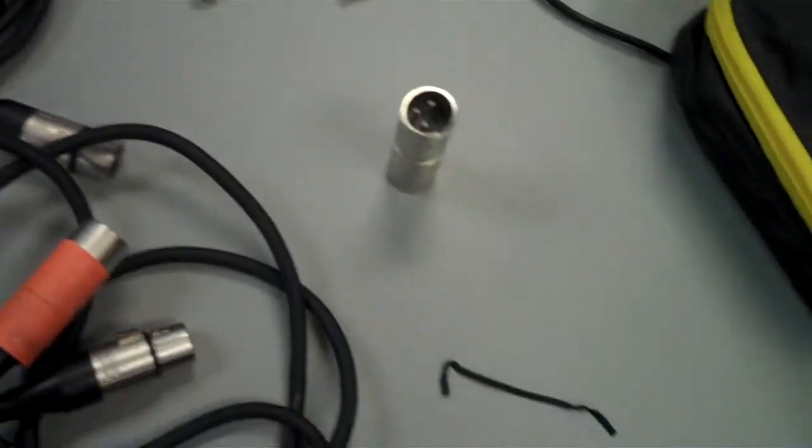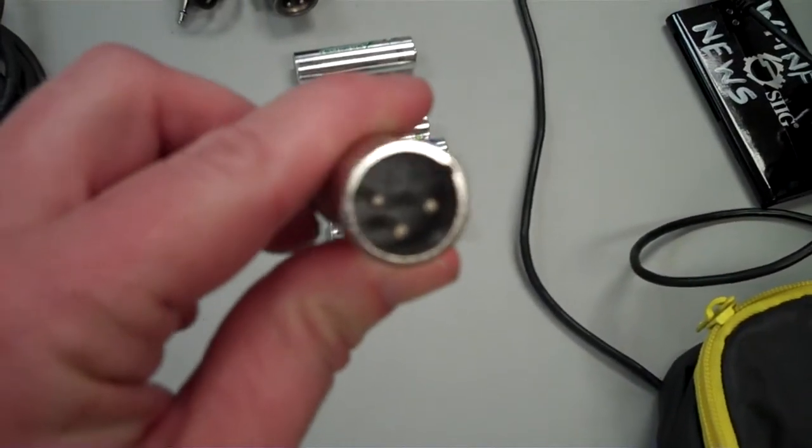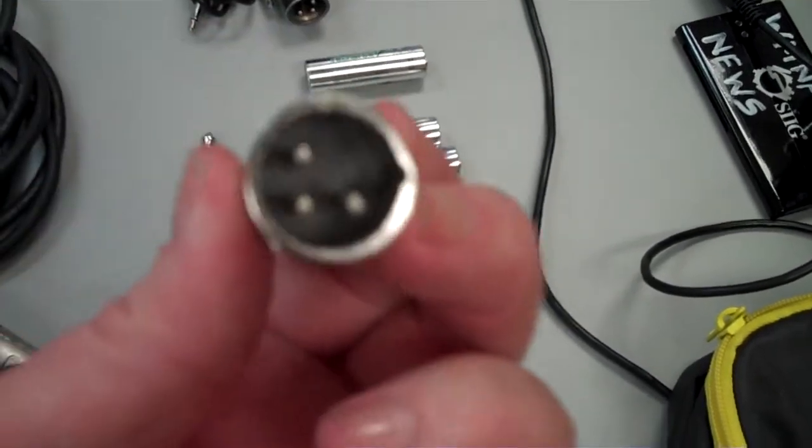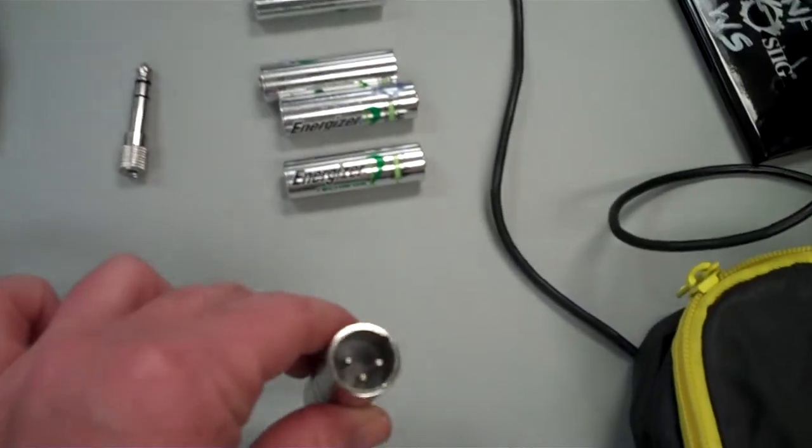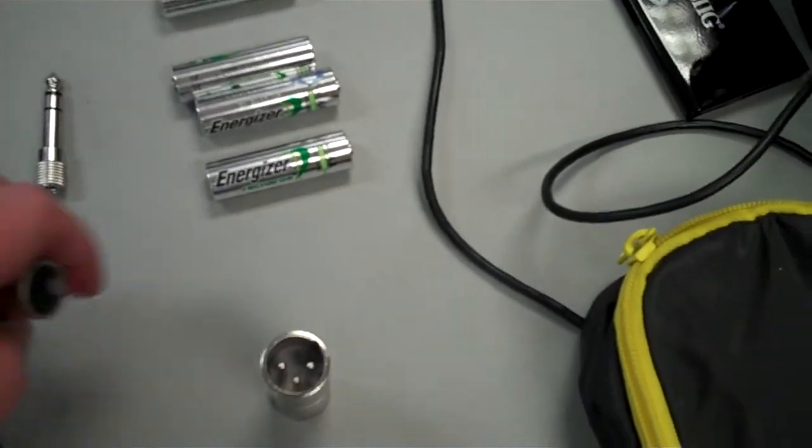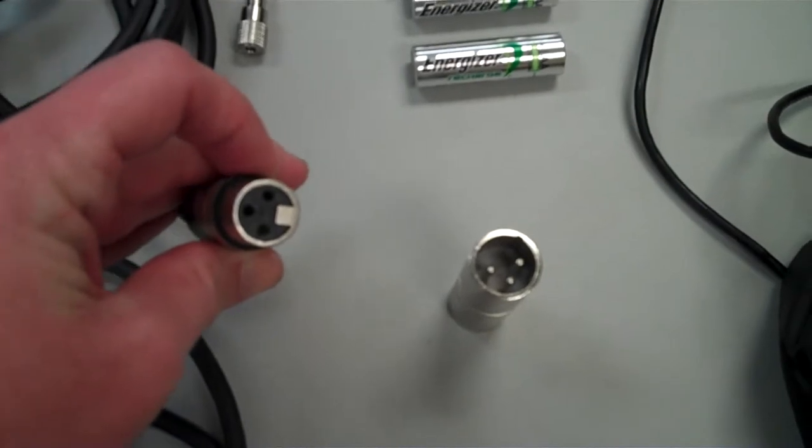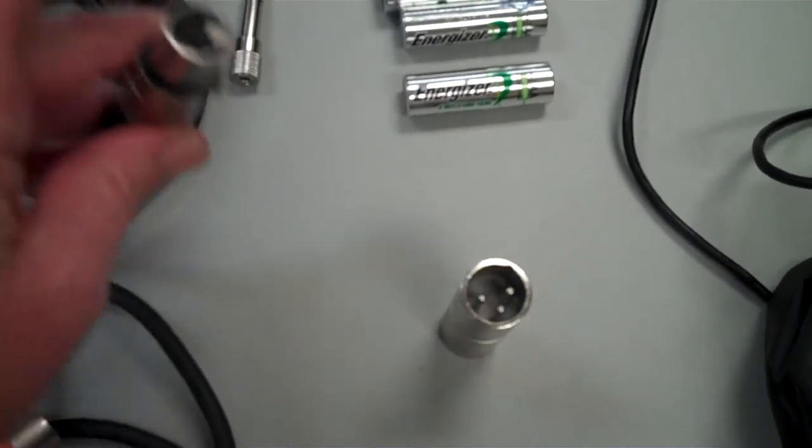An XLR flipper, which is this. It has a male end on each side. What that does is allow you to plug it into the end of a female adapter and turn that female adapter into a male.